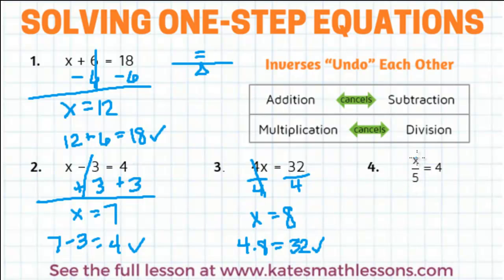In this last one, I have x being divided by 5, so to undo division, I need to use the inverse and multiply.